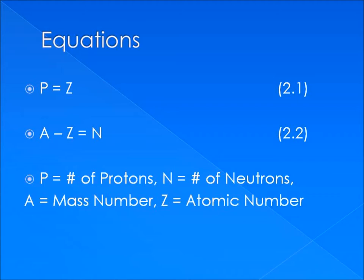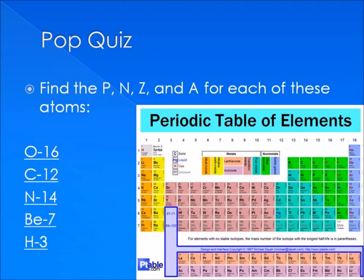With these equations in hand, we're going to have a short five-question quiz. Please pause the video to find the P, N, Z, and A for each of the atoms listed. A periodic table is given for reference. Are you finished? If so, at the end of this video, I would like you to send me your answers in a separate file so that they may be graded over email. It's not required, but if you would like to know what you would score, it is very handy.